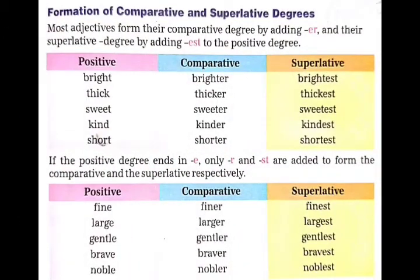Formation of comparative and superlative degrees. Most adjectives form their comparative degree by adding -er and their superlative degree by adding -est to the positive degree. Most adjectives positive degree में er को add करके comparative degree और est को add करके superlative degree बनाते हैं.